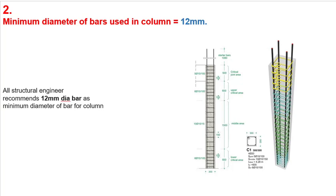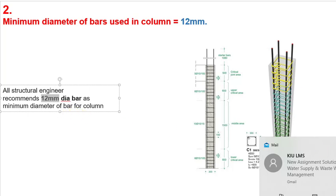The first point is that the minimum diameter of a bar used in a column is 12 millimeters. In the last video we discussed the minimum diameter for slabs. In today's video we are discussing the minimum diameter allowed in columns, which is 12 millimeters. A structural engineer recommends 12mm diameter as the minimum diameter of a reinforcement bar in a column.